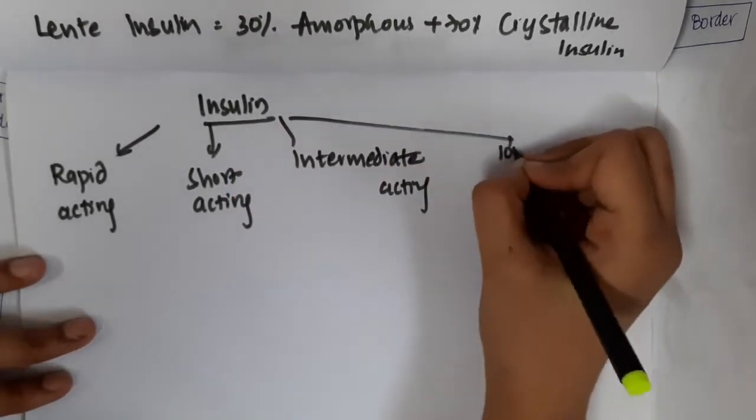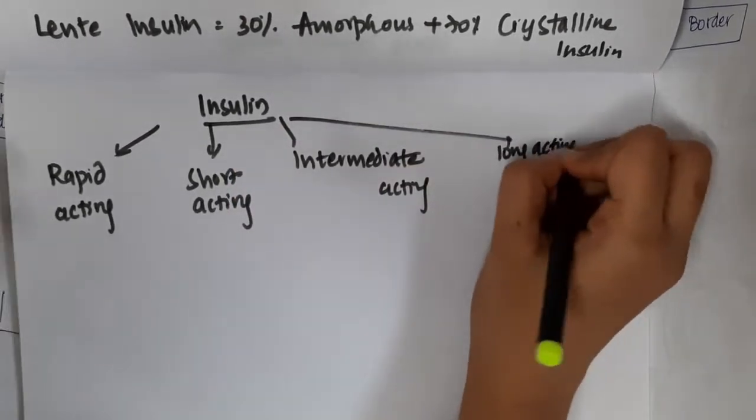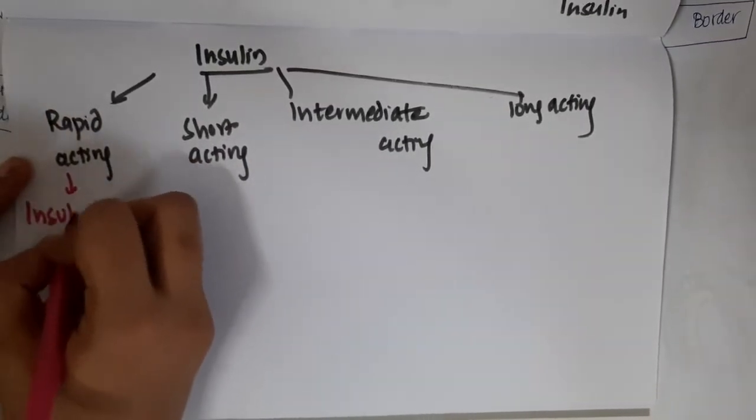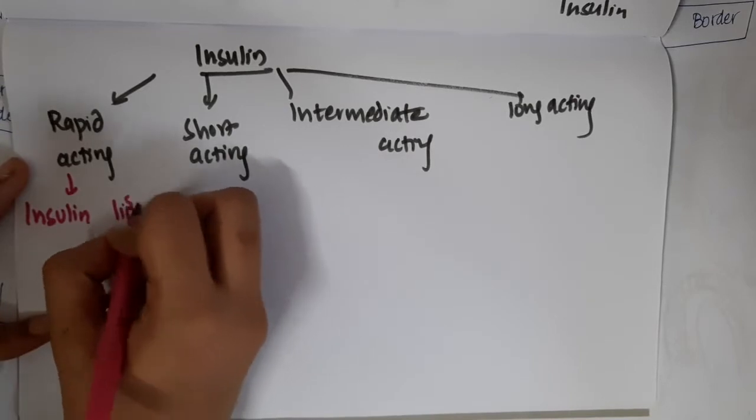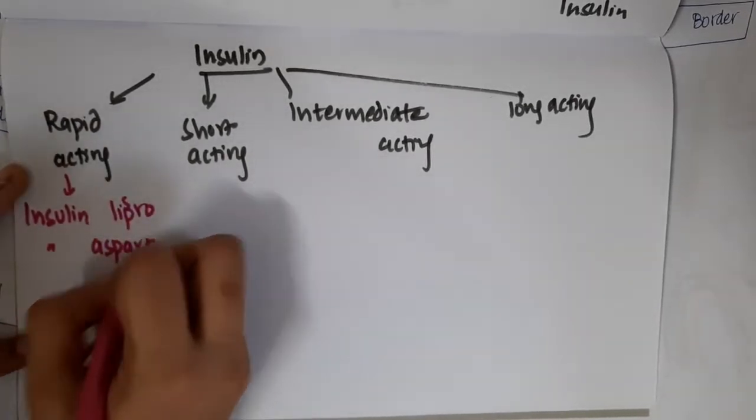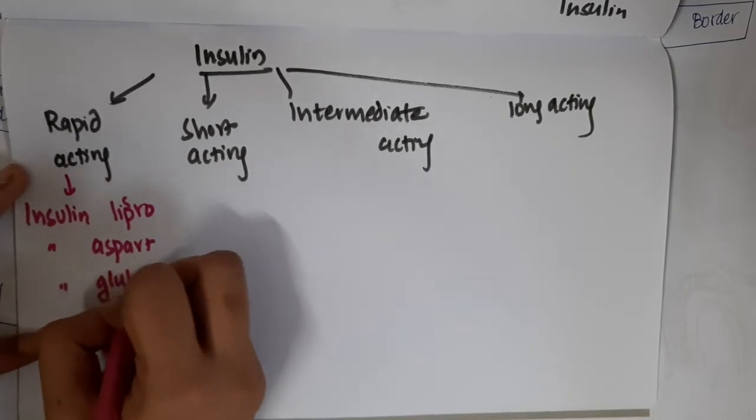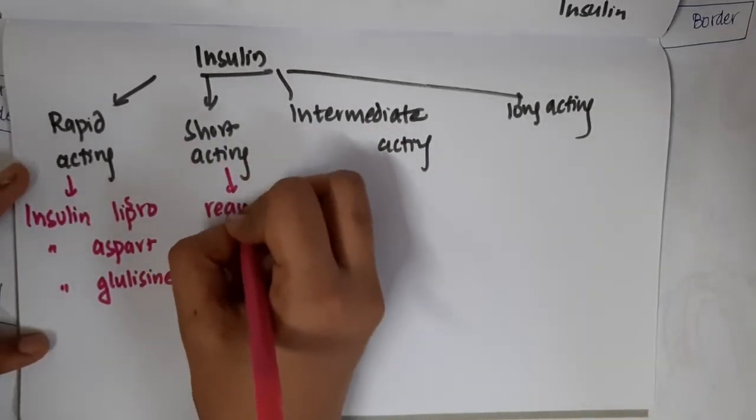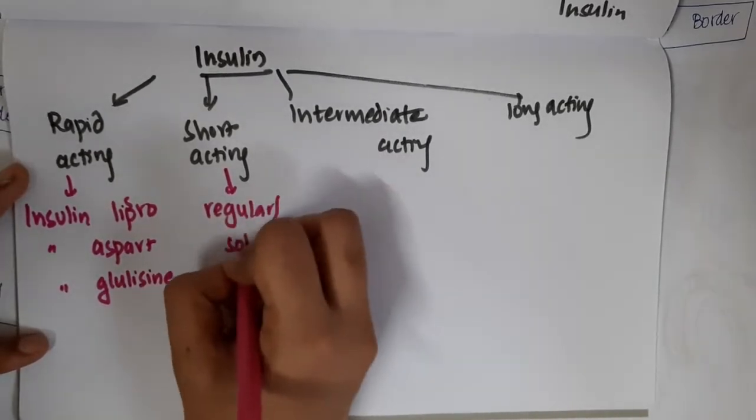First, if you see rapid acting insulin, these include insulin lispro, insulin aspart, and insulin glulisine. Short acting insulin is nothing but regular or soluble insulin.